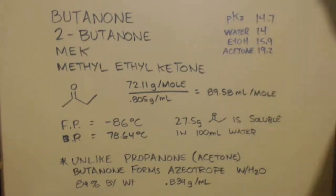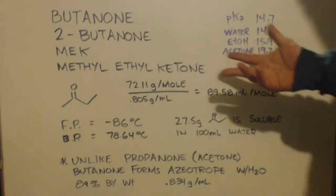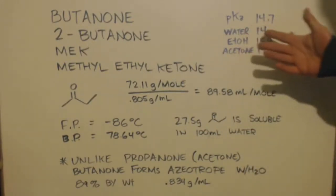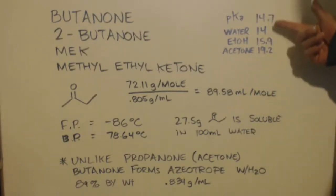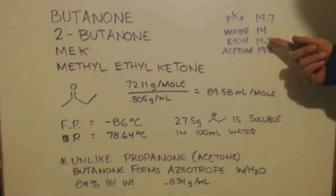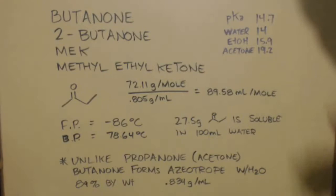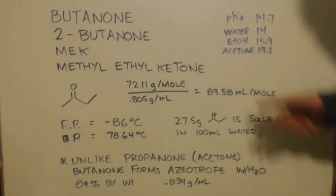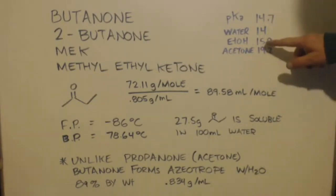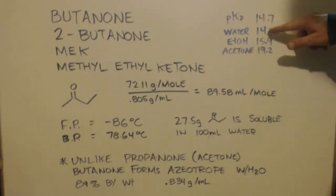One unique thing worth knowing: the pKa is 14.7. That's pretty low for a hydrocarbon-type solvent — it's not like water. Water is 14, so they're almost exactly the same. It almost has the pKa of water. Ethanol is 15.9, so butanone is actually more acidic than ethanol. You can see acetone is pretty acidic too, but it's not as acidic as ethanol, or this, or water.